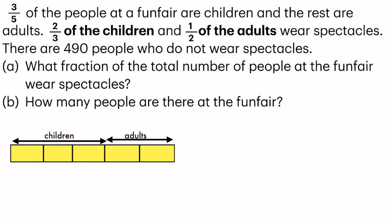Now, the next part of the statement, two-thirds of the children. As you can see, under the portion for children, there are three units, and just nice, the fraction is three. So two-thirds of the children wear spectacles. I'm just going to write spectacles over there.